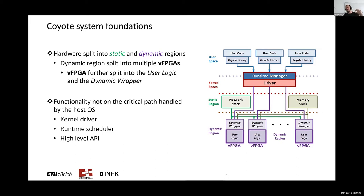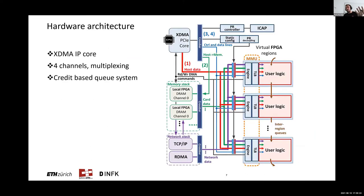Most functionality not in the critical path is moved to software. At the lowest layer we have the kernel driver, which handles most of the management — memory allocation, register mapping, interrupt servicing, and so on. On top of that, we have the runtime scheduler, which schedules submitted user tasks. At the high level, we have a high-level API exposed to user processes and applications, through which you can interact with the underlying hardware — you can view it as containers. As this is a Xilinx talk, I'll mention the XDMA IP core, which we use for interaction between the host and the FPGA. We found this core quite reliable, and it has all the functionality we need.